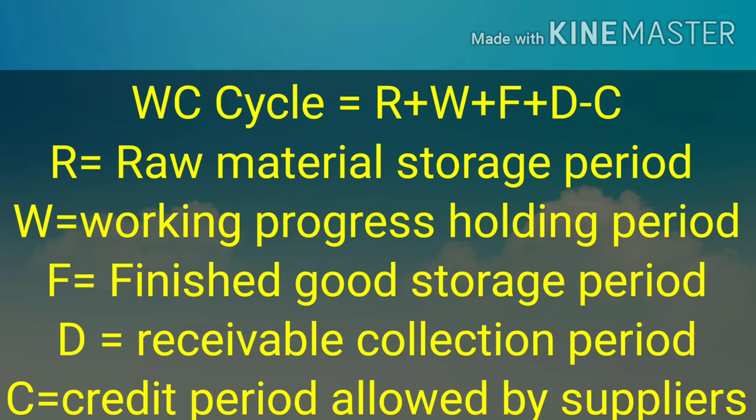Let us check the logic behind this formula. Assume a company purchases raw material today. The new raw material will wait some time before being transferred to production, then it will remain in the production process for some time and become finished goods. The finished goods will wait for sale, and after sale it will take some time to collect from debtors. All these periods are added to find the working capital cycle length. Since creditors allow a credit period, we can reduce that period from the total because payment is deferred from the date of purchase.